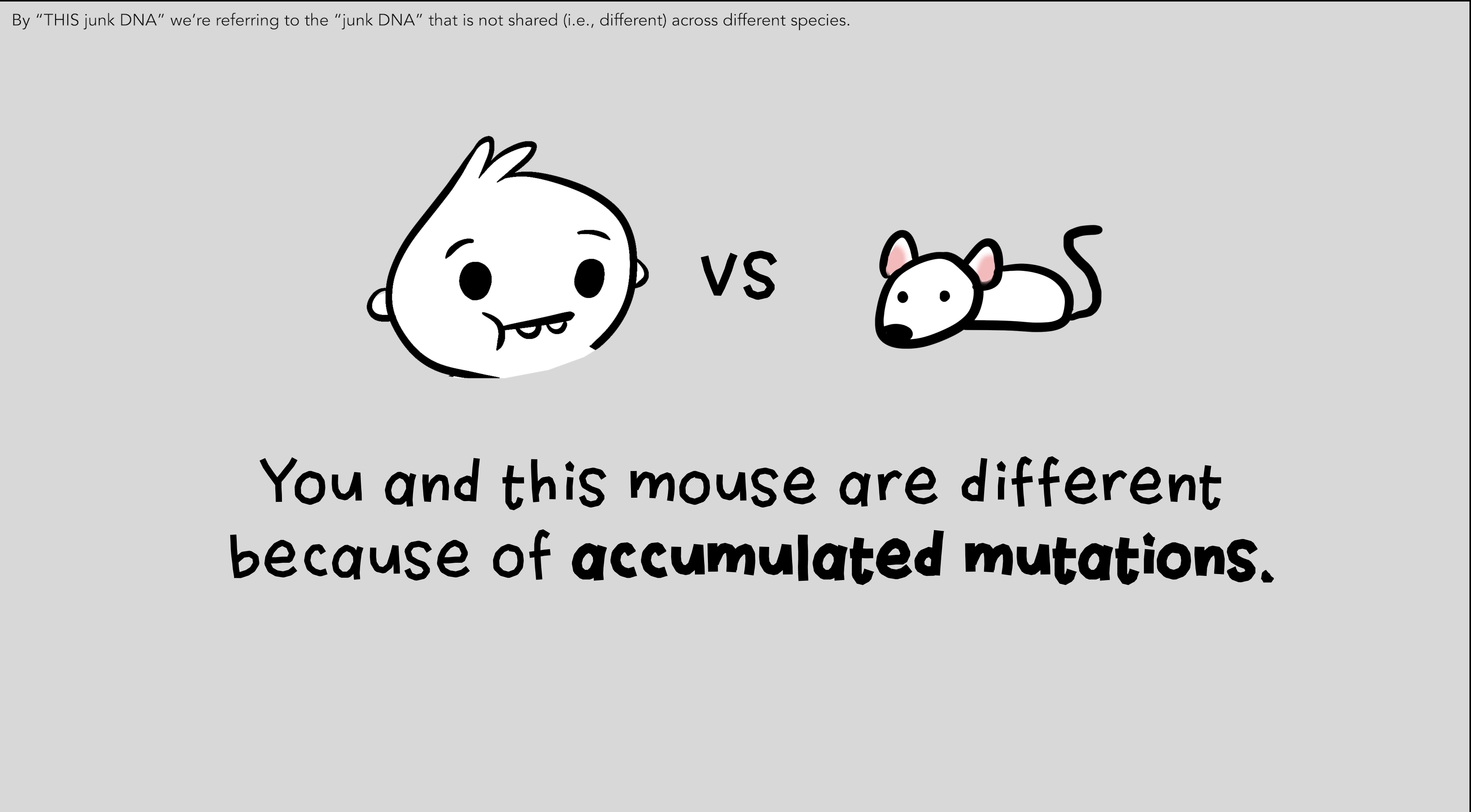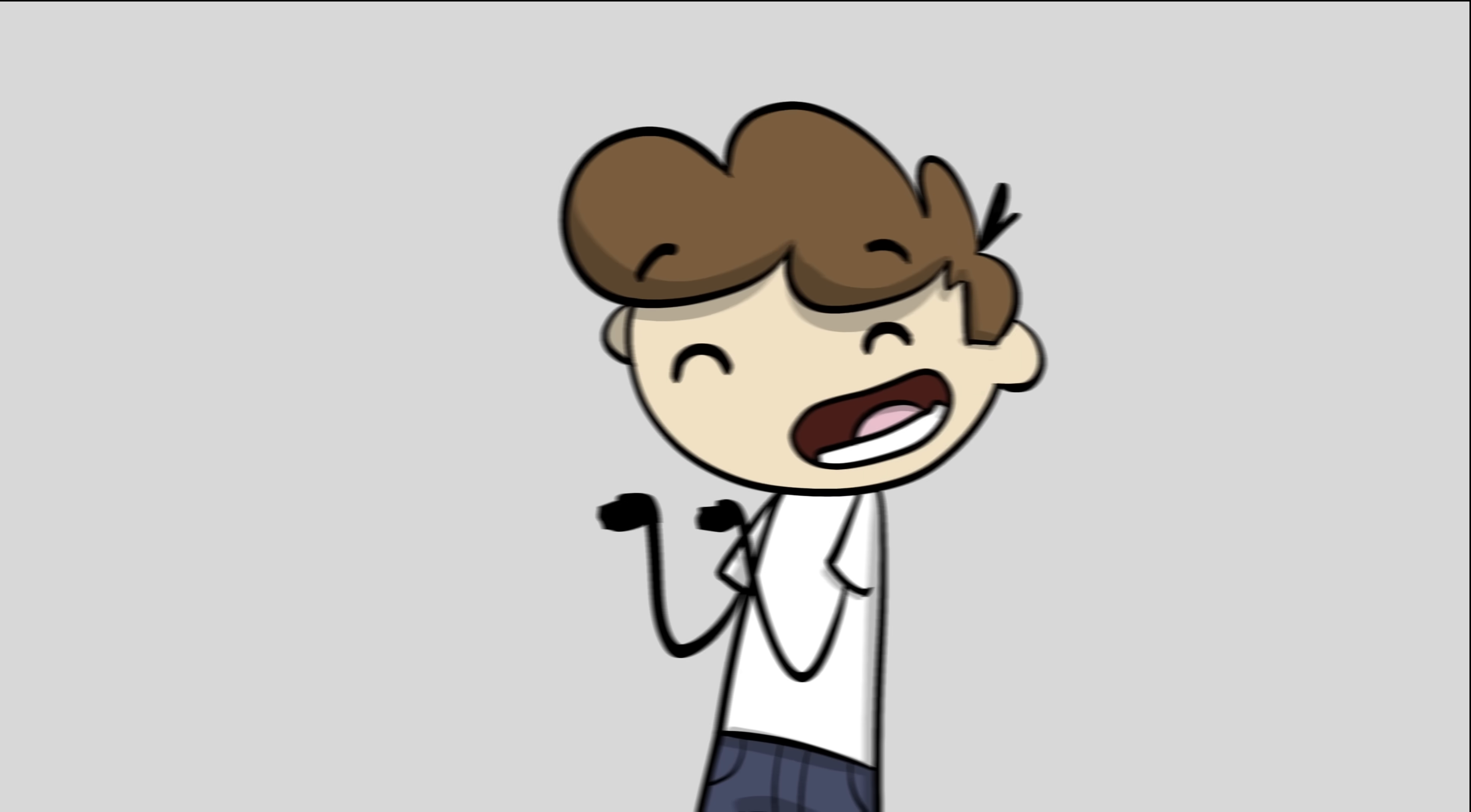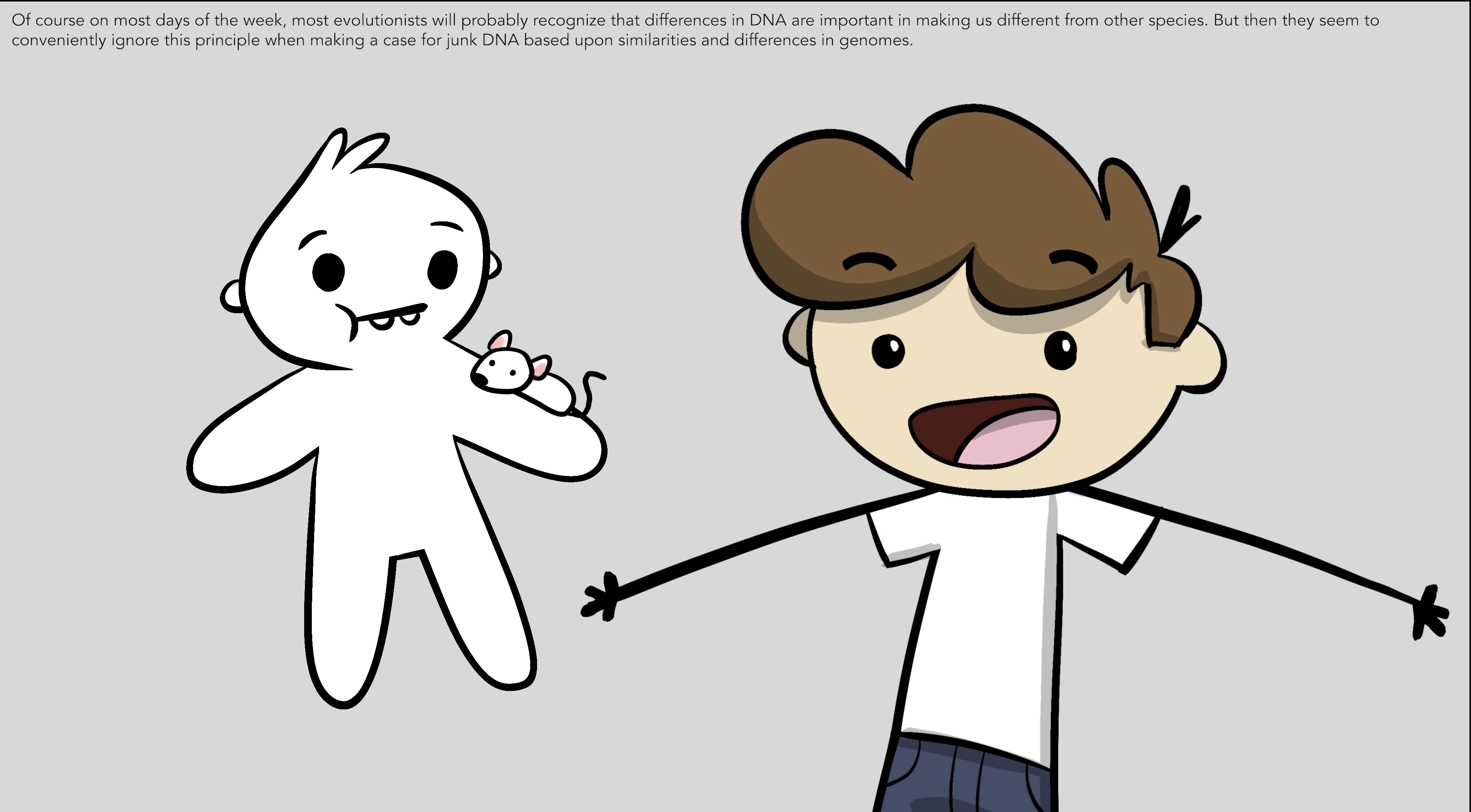And on top of that, the first point in this argument—we're different only because of accumulated mutations—is an assumption. Scientists don't know that all genetic differences come from mutations. They assume that at the outset because their evolutionary viewpoint tells them to. But what if—and I know this might sound crazy, but hear me out—what if the differences in DNA are what help make us different from mice?